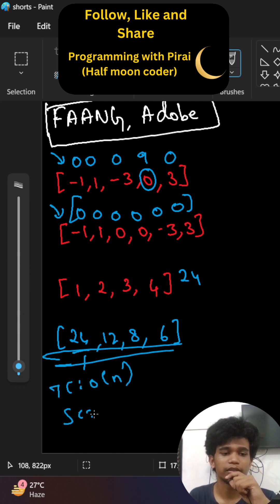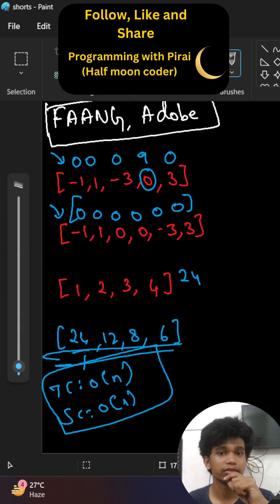What is the time complexity? It is O of n. And what is space complexity? It is O of 1 because we are using a resultant array, not the auxiliary space.